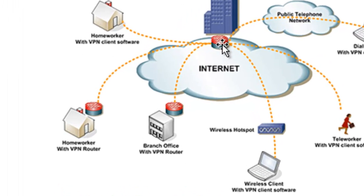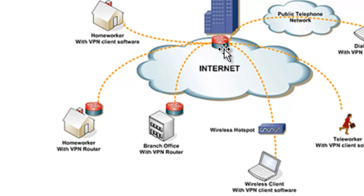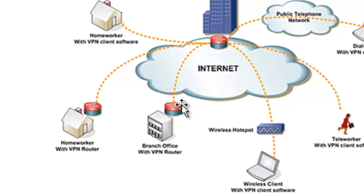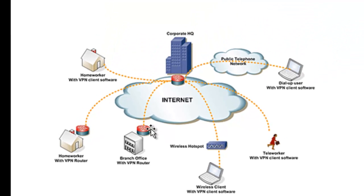An entrance to the tunnel in a router is created by a virtual link. When the router is going to send a packet over the virtual link, it encapsulates the packet in an IP datagram. Inside that datagram, it contains the destination address, which is the IP address of the router at the other end of the tunnel.